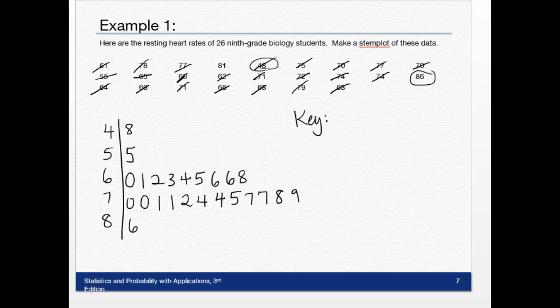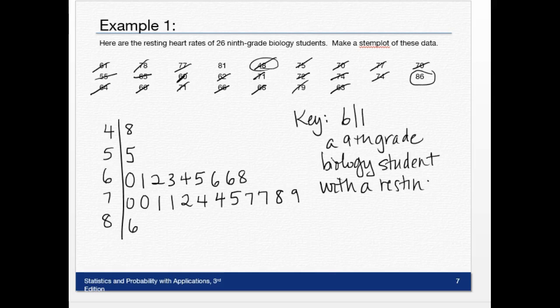I've done that, and then I need to make my key. When you make your key, you can pick any point you want out of this. I'm going to use 6|1, and I've got to define what this is in context. 6|1 represents a ninth-grade biology student with a resting heart rate of 61 beats per minute. Include the context of the question—that's really important.